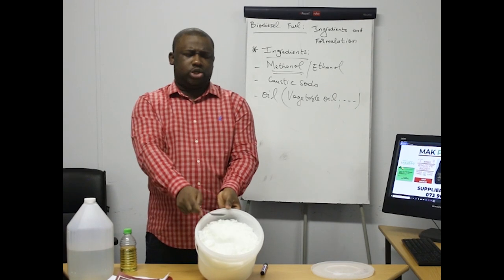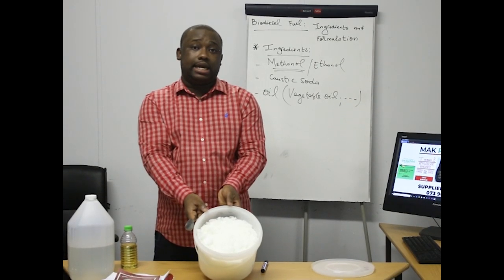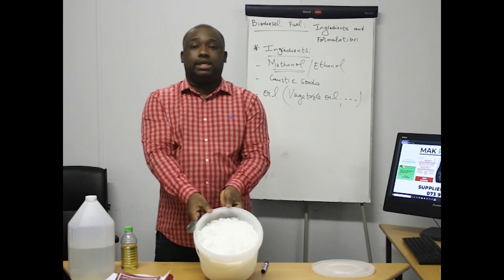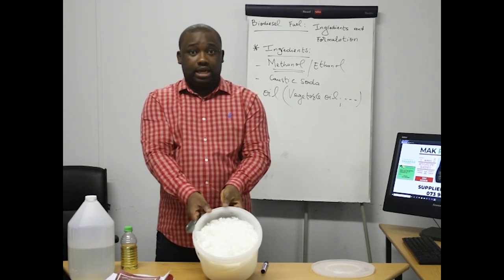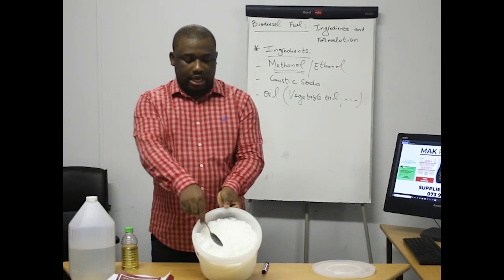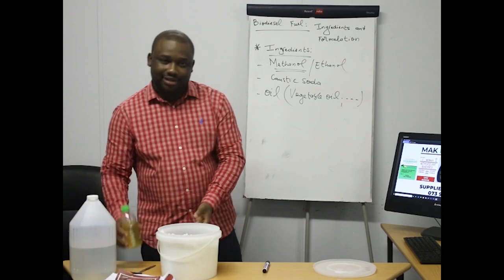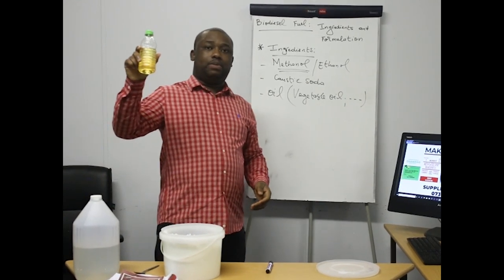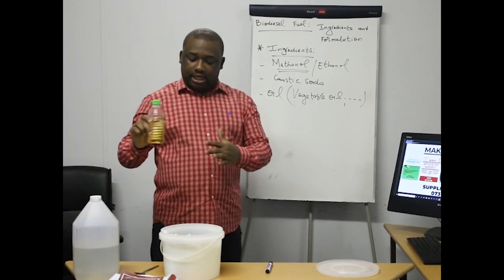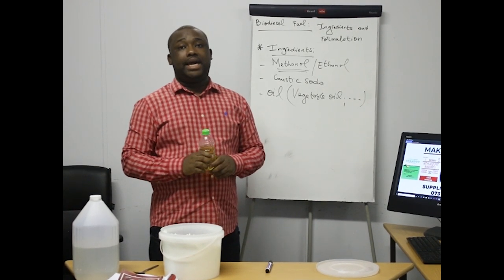When you do this, make sure that you wear goggles, because when caustic soda enters into your eyes it can lead to blindness. You need to make money, that's true, but also consider taking good precautions while working with these chemicals. This is caustic soda, and then oil — no matter the amount, these three ingredients are enough for the production of biodiesel.